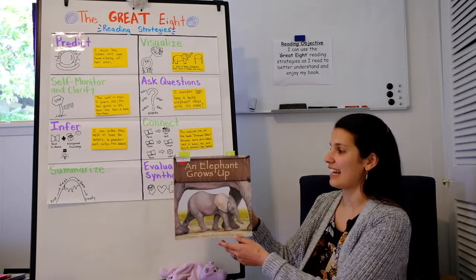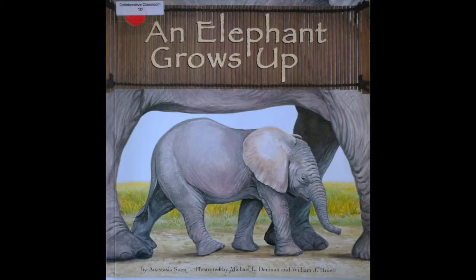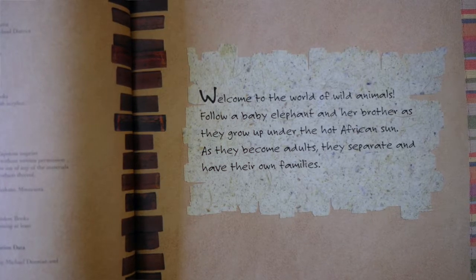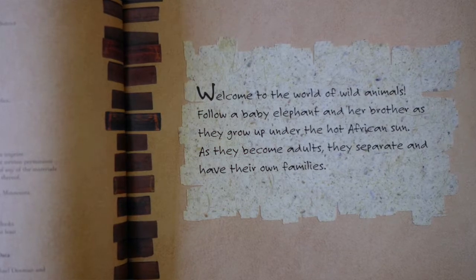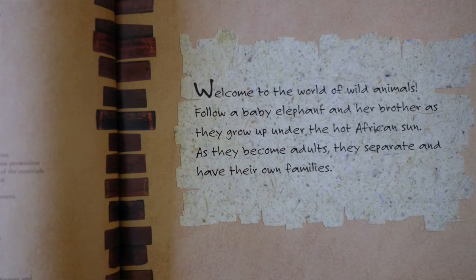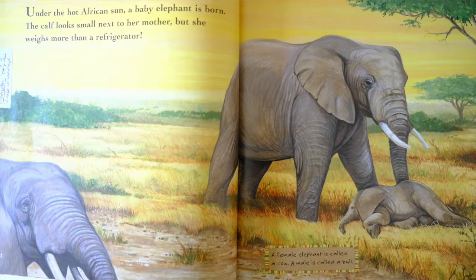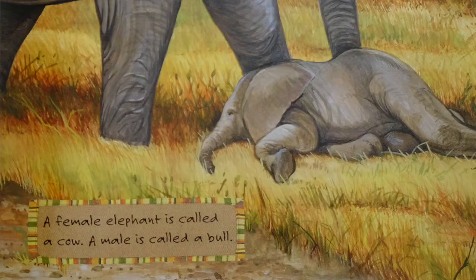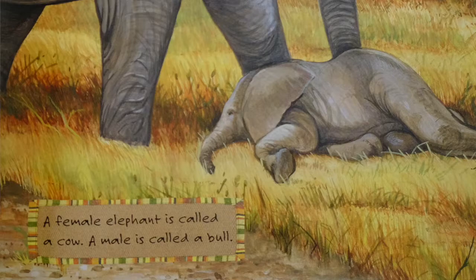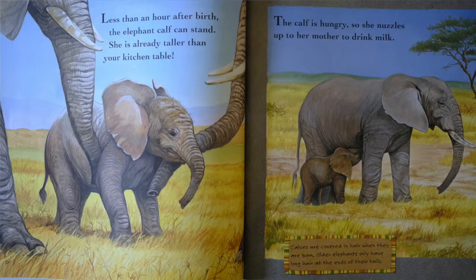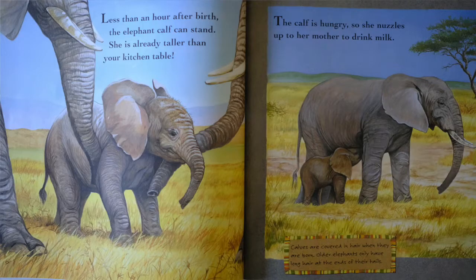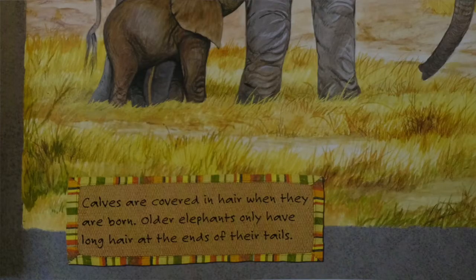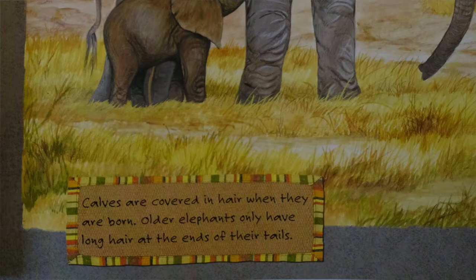Now we can really get started. An elephant grows up, written by Anastasia Suin, illustrated by Michael L. Denman and William J. Hewitt. Welcome to the world of wild animals. Follow a baby elephant and her brother as they grow up under the hot African sun. As they become adults they separate and have their own families. Under the hot African sun a baby elephant is born. The calf looks small next to her mother but she weighs more than a refrigerator. A female elephant is called a cow, a male is called a bull. Less than an hour after birth the elephant calf can stand. She's already taller than your kitchen table. The calf is hungry so she nuzzles up to her mother to drink milk. Calves are covered in hair when they are born. Older elephants only have long hair at the ends of their tails.